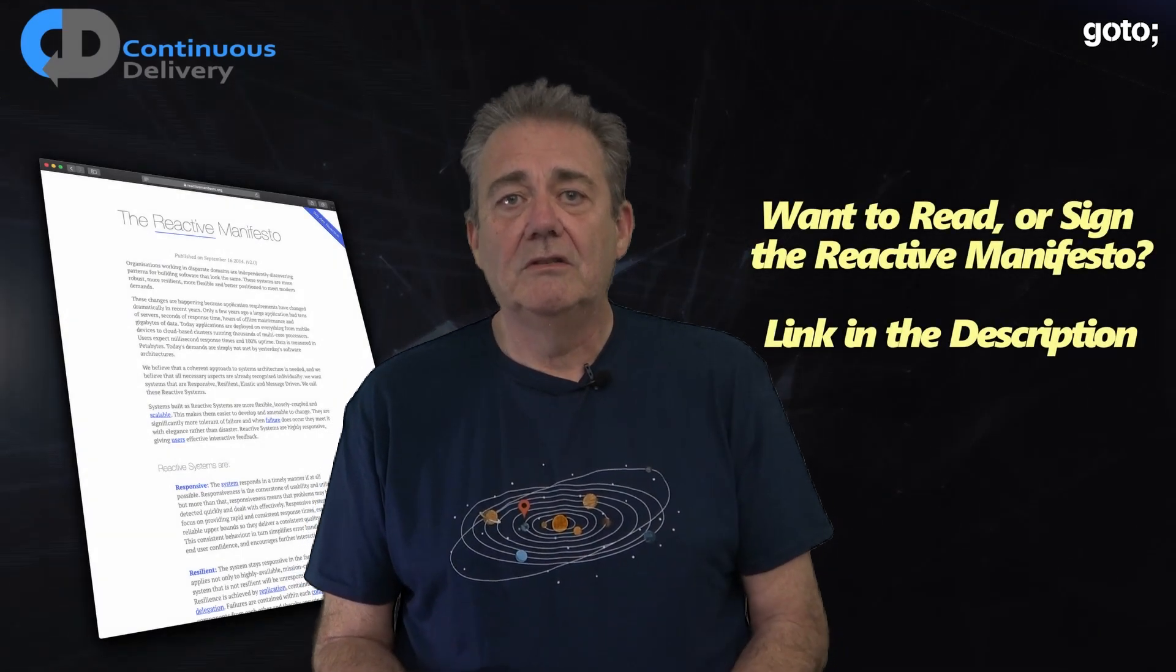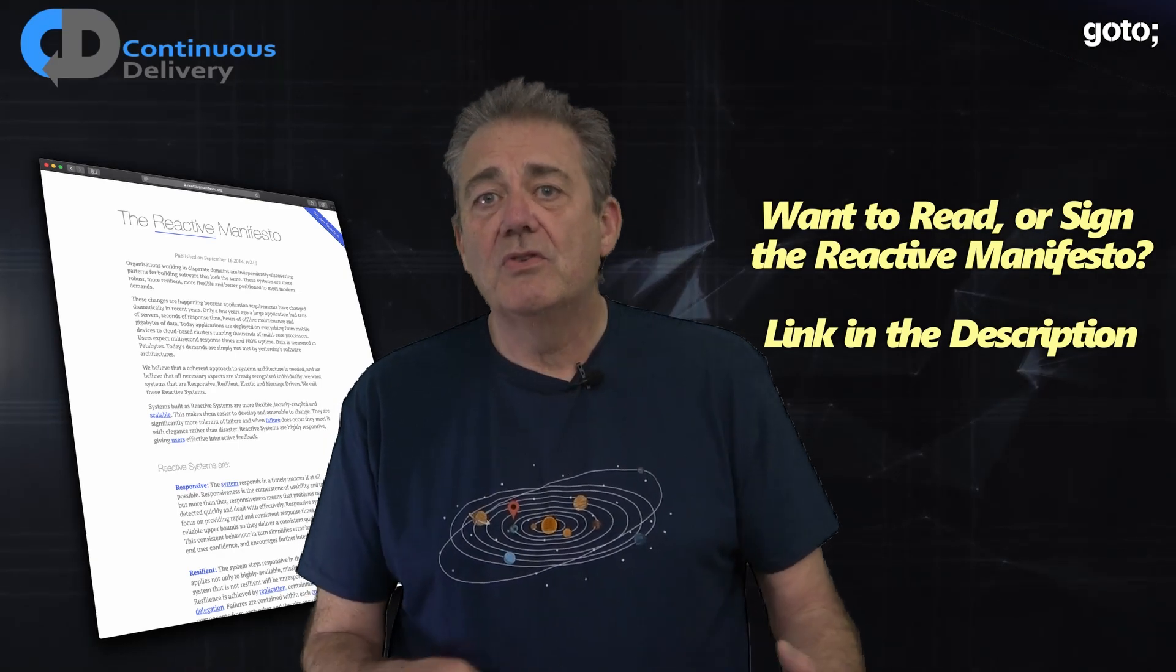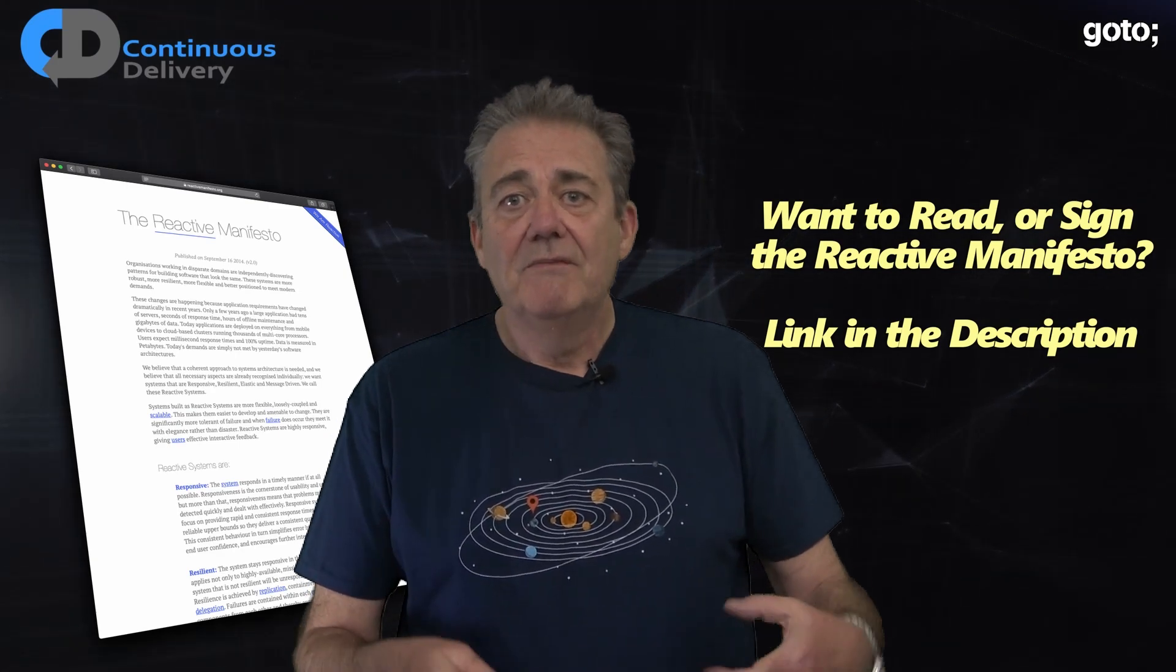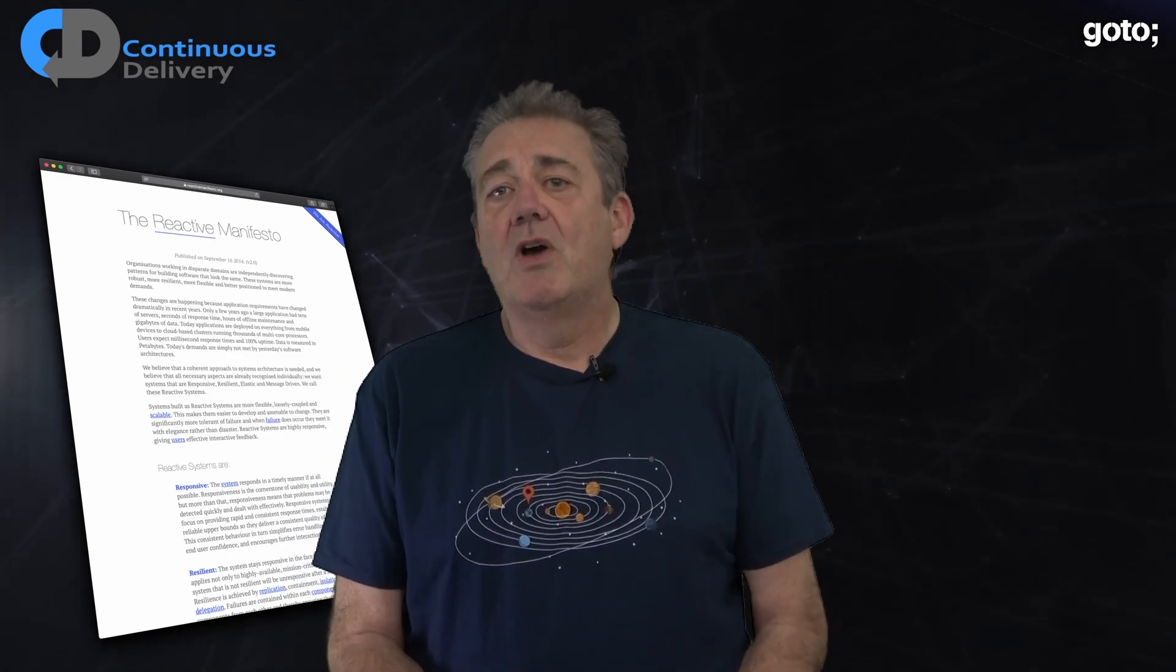The Manifesto was started by Jonas Bonner and Roland Kuhn who had built an actor-based system called Akka. They used some of our open source high performance technology to significantly improve the performance of Akka. So when they started writing the Manifesto they asked me and my colleague Martin Thompson to contribute. So what's this all about?